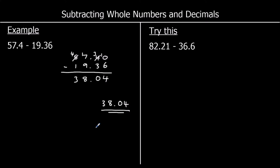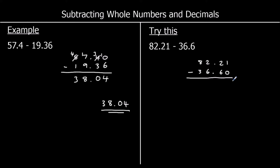Here's a question for you to try — pause the video and give it a go. We have 82.21 take away 36.6. Lining up the numbers: tens with tens, ones with ones. 36.6 has nothing in the hundredths — I can put a zero or leave it. Start with the smallest column, the hundredths: one take away zero is one.